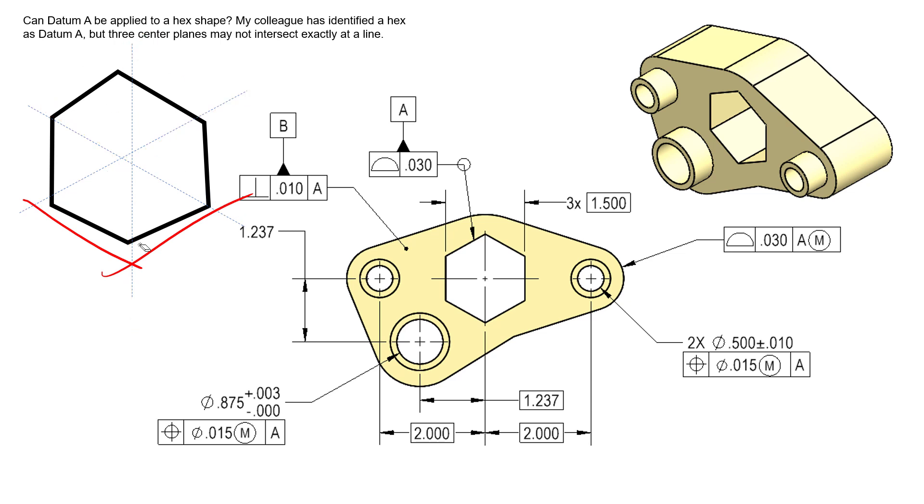So how do we get a datum axis from an irregular datum feature? Just like getting an axis from an irregular cylinder, we still need to utilize that true geometric counterpart to yield our datum axes. In this scenario though, we get a datum axis and a datum plane from this linear extruded shape—at least that's what the standard calls these sort of irregular features being used as datum features.